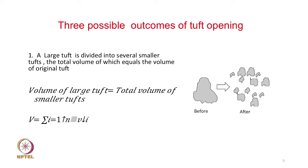There are three possible ways of tuft opening. A large tuft can be divided into several smaller tufts whose total volume equals the volume of the original tuft — this is what happens when a tuft is opened out. The capital V equals the sum of small v_i's: we generate a large number of small tufts from one big tuft and the total volume remains the same. This is one possible way in which opening can take place.